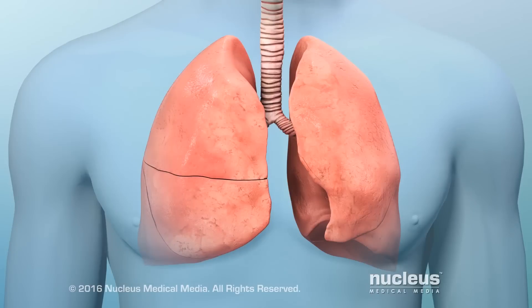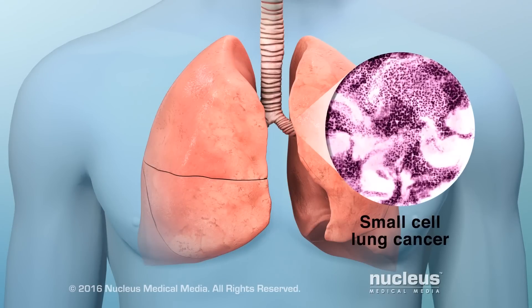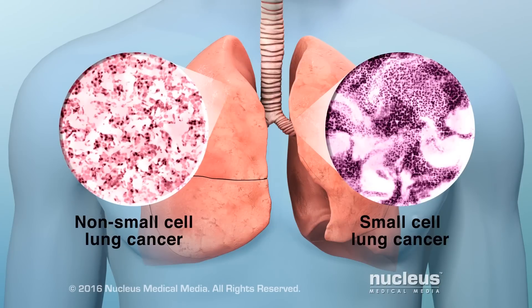There are two main types of lung cancer: small cell lung cancer and non-small cell lung cancer. They are named for the kinds of cells in the cancer and how they look under a microscope.